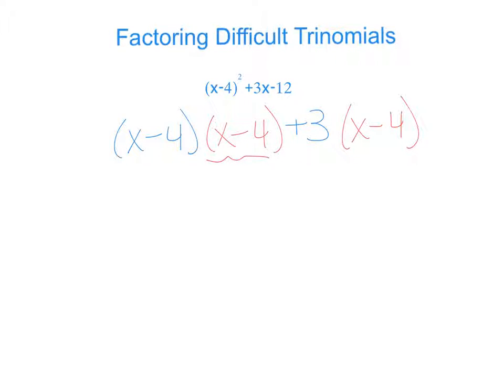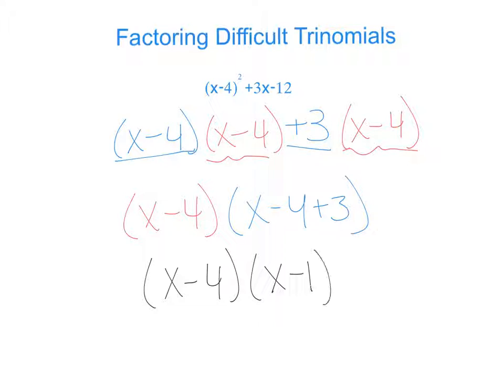Now I see that there's an x minus 4 and an x minus 4. So I'm going to factor that out. And I'm left with x minus 4 plus 3. Now I can simplify negative 4 plus 3. So my answer, x minus 4 times x minus 1.